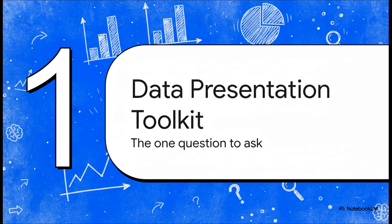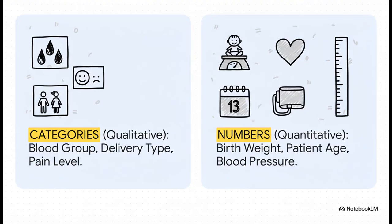The trick is to think of it like having a toolkit. And to open this toolkit, you only need to ask one single simple question about your data. And that one question will tell you exactly which tool to grab. And here it is, that one crucial question. Is my data in categories or is it in numbers?